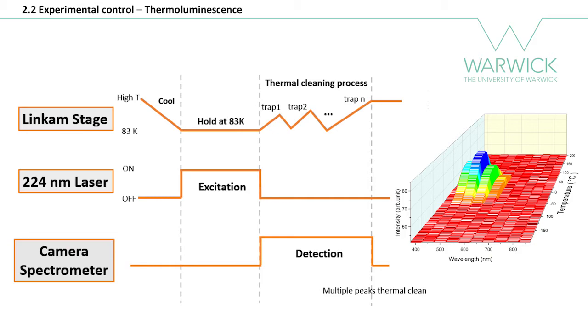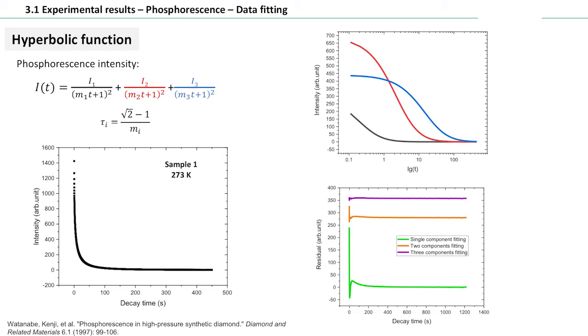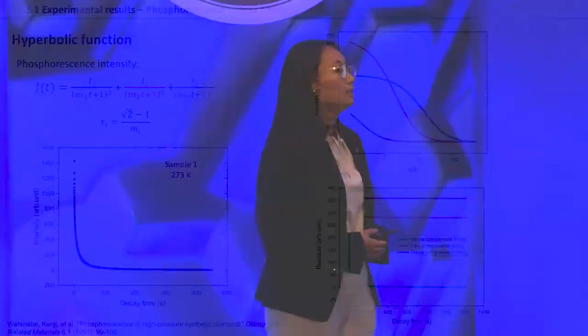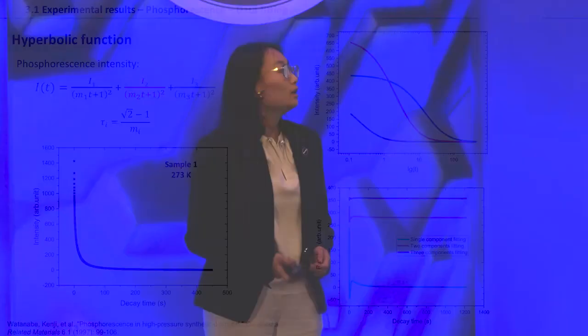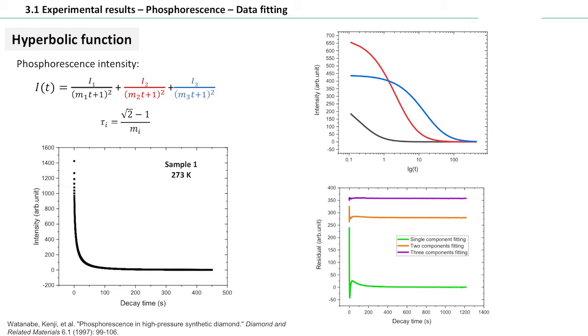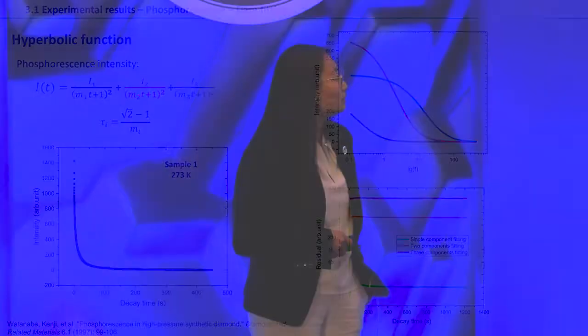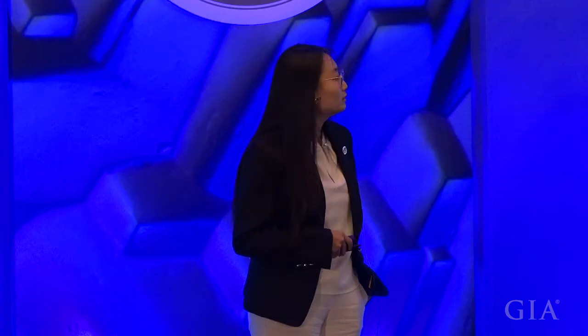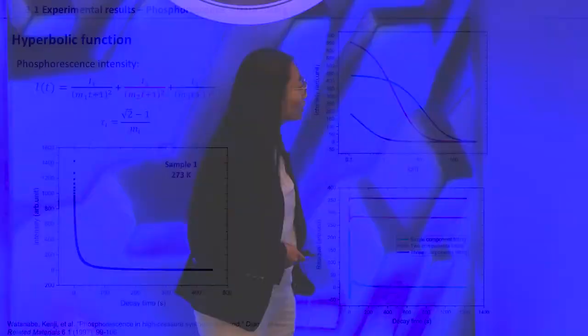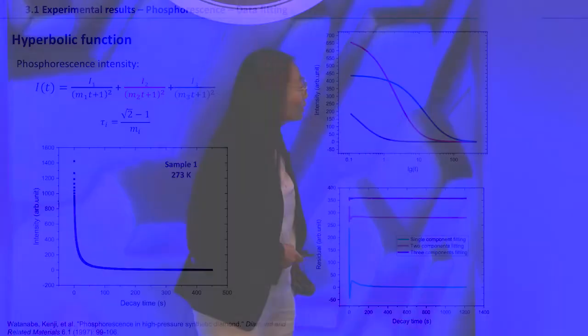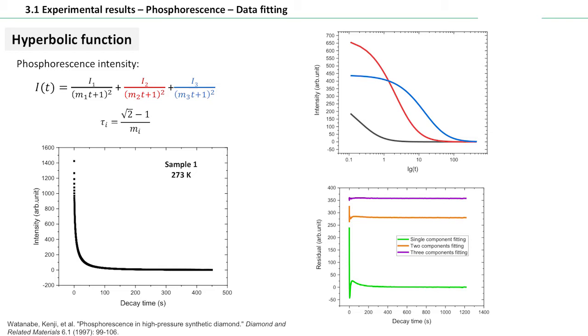Here is our experimental data collected by the camera for the phosphorescence decay. This decay curve is generally fitted by a combination of exponential functions or a combination of hyperbolic functions, and the hyperbolic function always fits better. For example, here is a three-component hyperbolic function — we can see that this curve can be fit by three very different components. Sometimes two components fit well, and sometimes more components are required to get a satisfactory fitting. Looking at the residuals, the three-component fitting for this curve is more reasonable than one or two components.